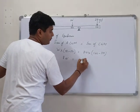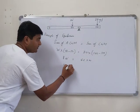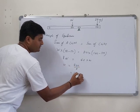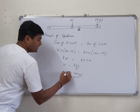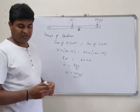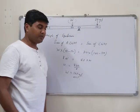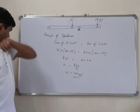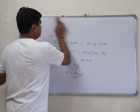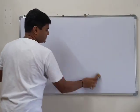This gives 8W = 20 into 42 = 840, so W = 840/8 = 105 gf. Therefore the weight of the ruler is 105 gf.